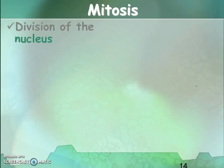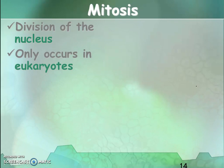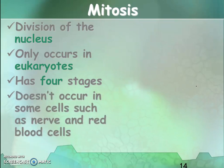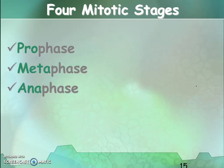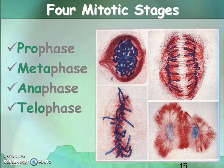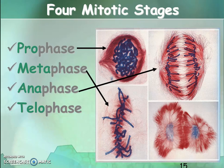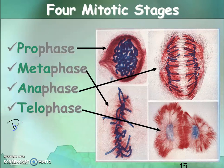Let's look at the different phases of mitosis. Mitosis is division of the nucleus, it only occurs in eukaryotes, and it has four stages. It does not occur in some cells such as nerve cells and red blood cells. The four mitotic stages are: prophase, metaphase, anaphase, and telophase. To remember them, use the mnemonic PMAT — prophase, metaphase, anaphase, and telophase.